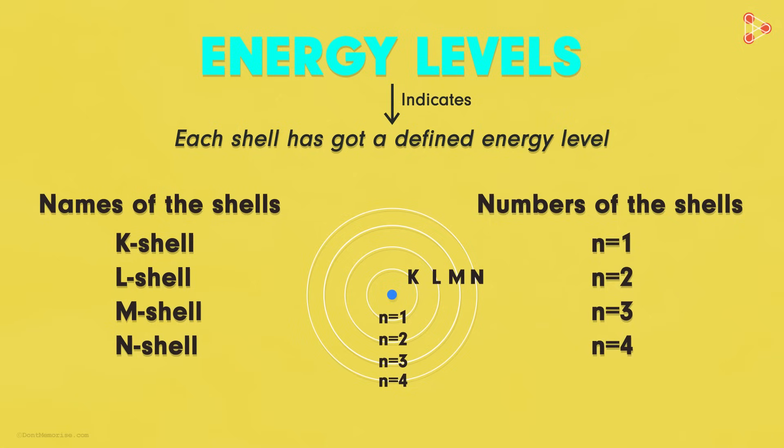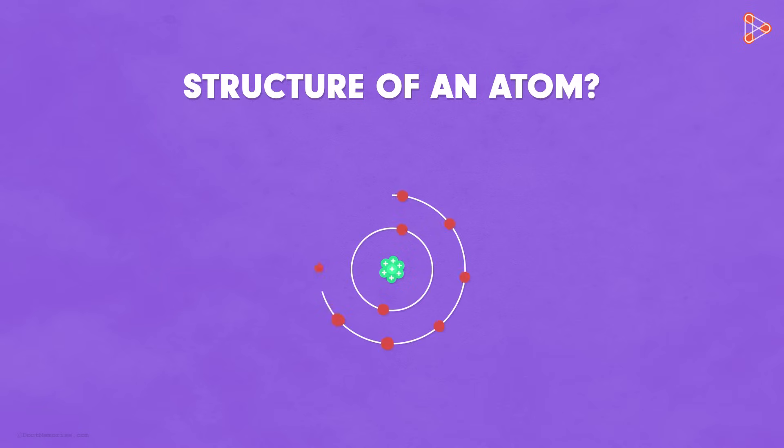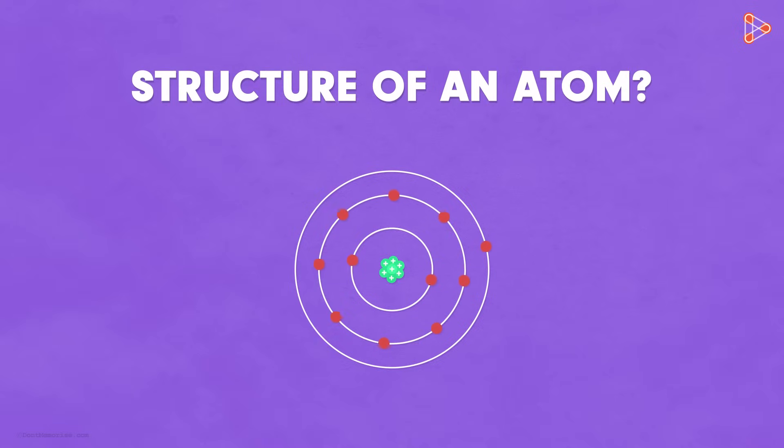So we can name them alphabetically or we can even number them. With all these theories and points known, do we now know the structure of a typical atom completely? The nucleus contains positive protons and the electrons revolving around in fixed orbitals. Is that how an atom is structured?